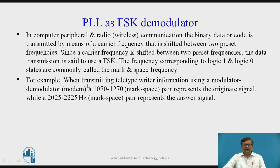For example, when transmitting teletype writer information using a modem, the frequencies used are 1070 Hz and 1270 Hz, which correspond to the space and mark frequencies. The carrier signal varies between these two frequencies — at one time having one value and at another time having the other value.